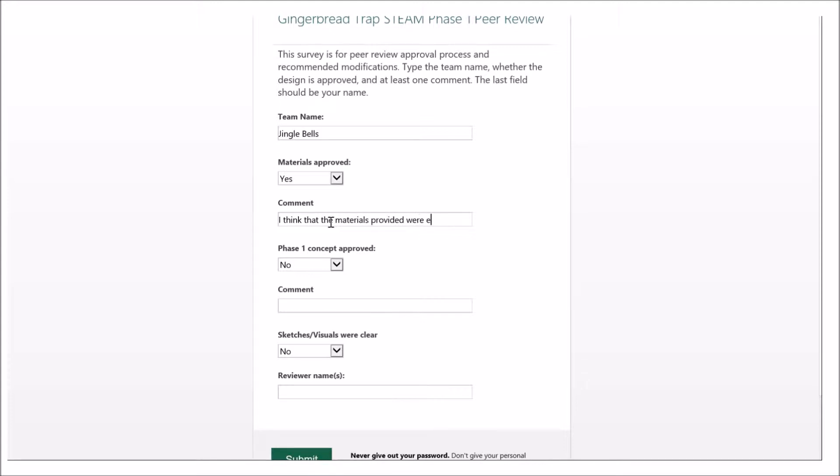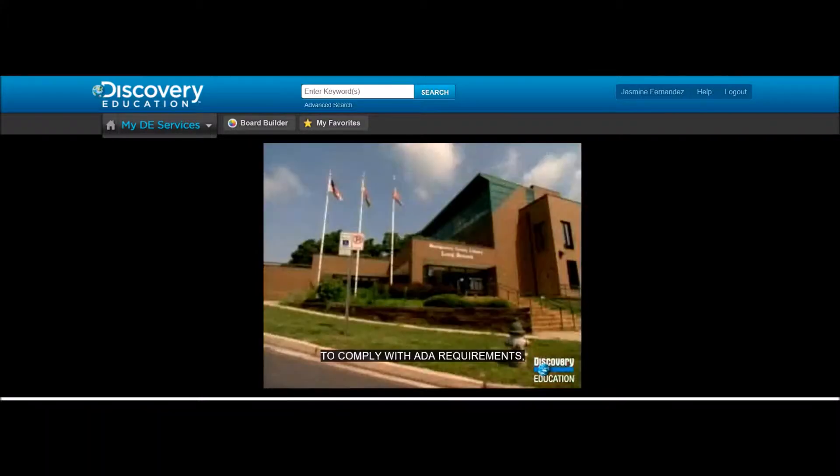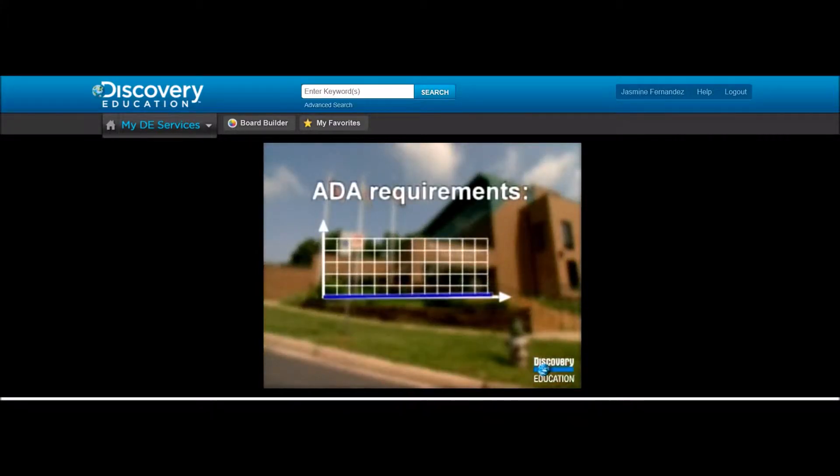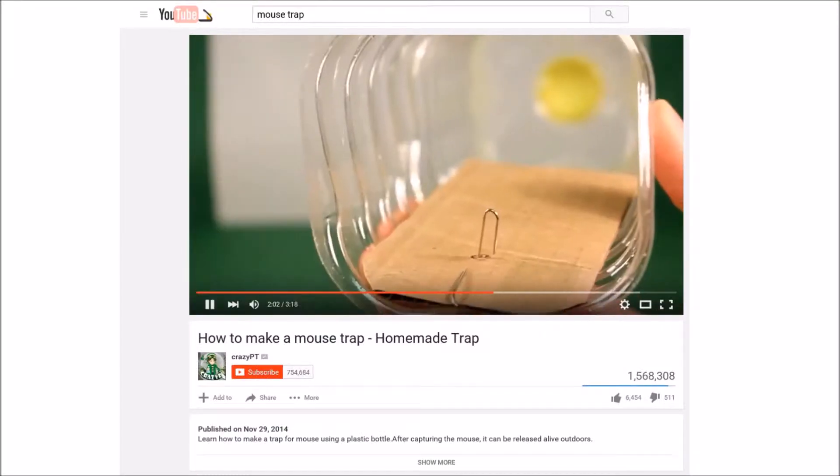Teams could then read any feedback or comments their group received. The simple machine we planned to incorporate was a ramp. And, inspired by an external source we located, we planned for the placing of the gingerbread man on the ramp to trigger the closing of the trap.